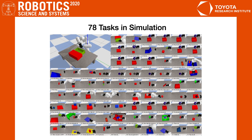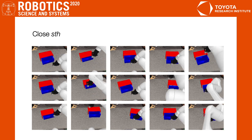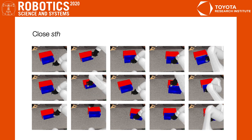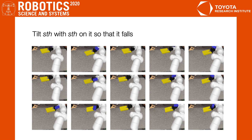While the Something-Something dataset contains 174 different action classes, we select 78 tasks which are suitable for our robot simulations. We set up the simulation in PyBullet, and for each task, we train a policy using our learning from demonstration pipeline. Here we show some examples of the 78 tasks — for instance, 'closing something,' tested with randomly generated initial object poses, and 'tilting something with something on it so that it fails.'